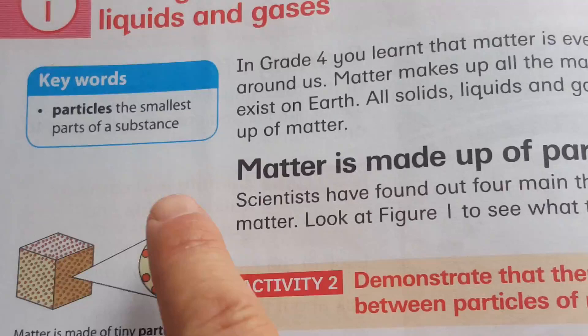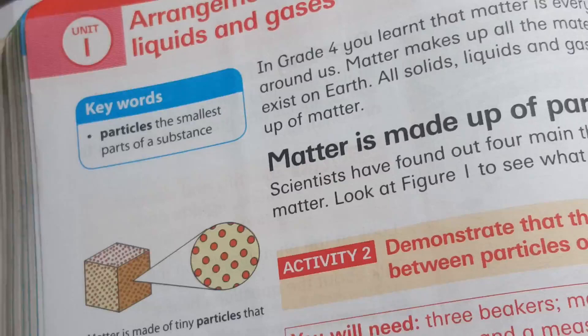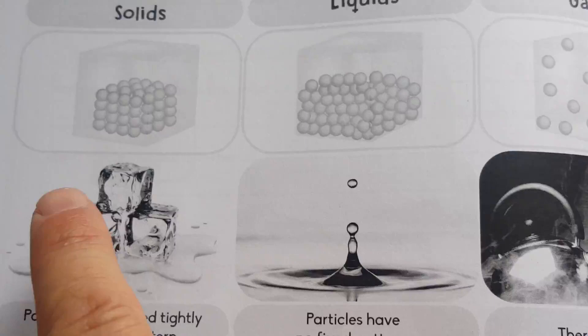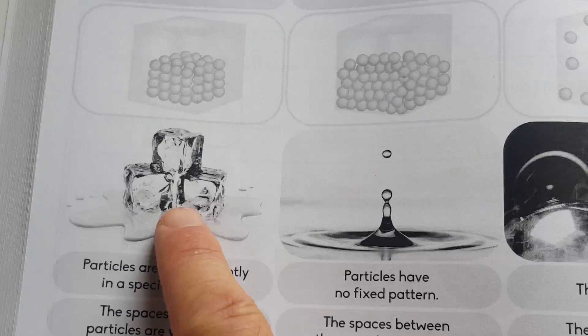All things consist out of particles, and particles are the small parts of a substance. We're going to learn about the three phases of particles. You can see we get them in solids, liquids, and gases. The particle arrangement in solids looks like this, in liquids like this, and in gases like this.